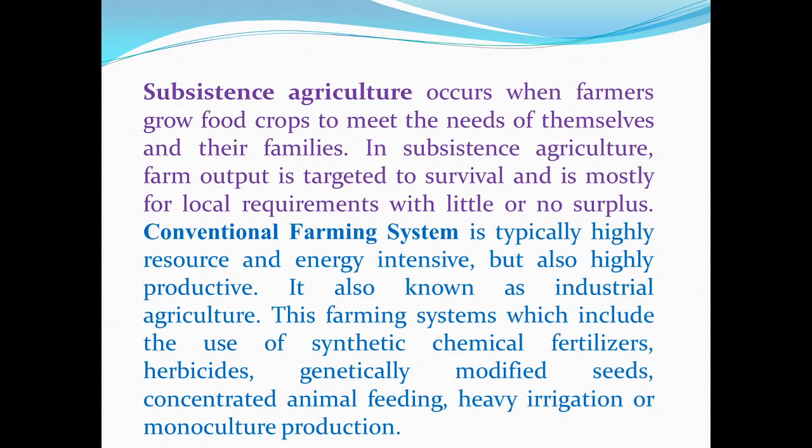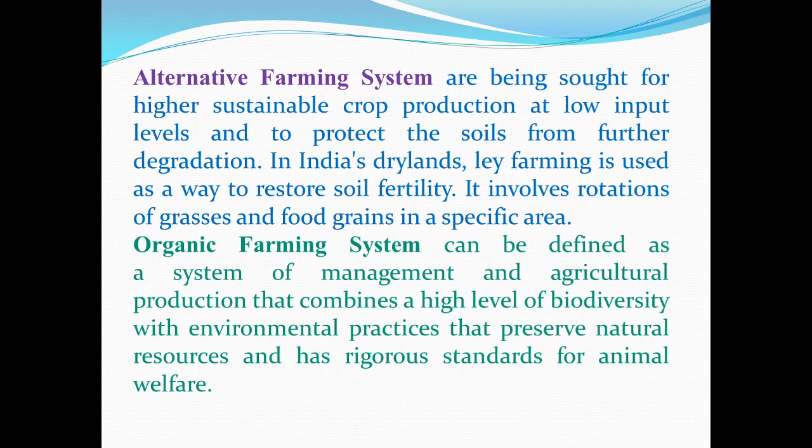Conventional farming system is typically highly resource and energy intensive but also highly productive. It is also known as industrial agriculture. This farming system includes the use of synthetic chemical fertilizers, herbicides, genetically modified seeds, concentrated animal feeding, heavy irrigation and monoculture production, etc.